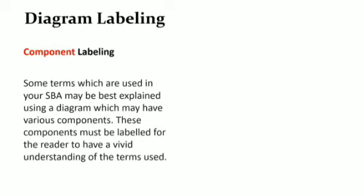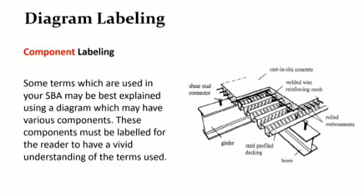Another element of diagram labeling is component labeling. Some terms which are used in your SBA may be best explained using a diagram, which may have various components. These components must be labeled for the reader to have a vivid understanding of the terms used. Here's an example.